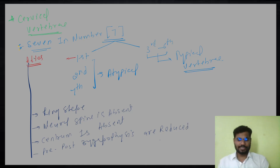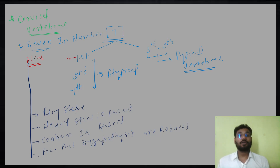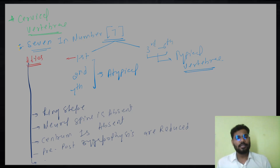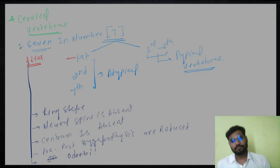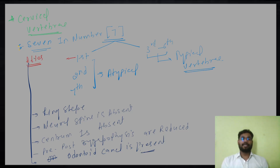Apart from this, there is a canal that is present and that is called the odontoid canal. I will let you know what odontoid means. So the odontoid canal is present in the atlas vertebra.